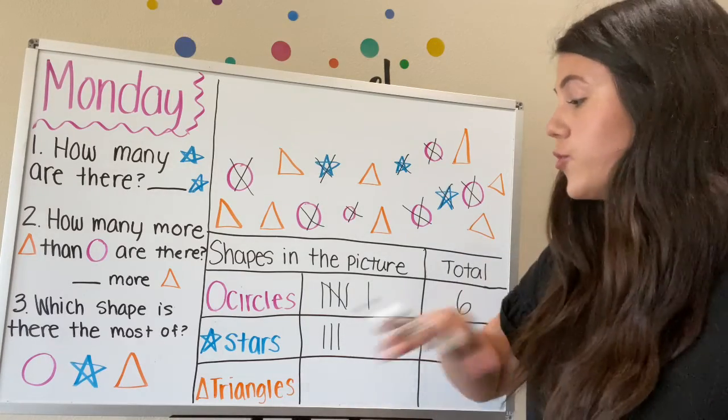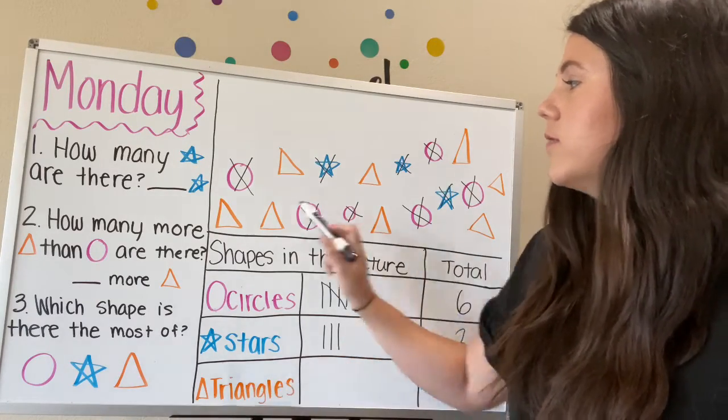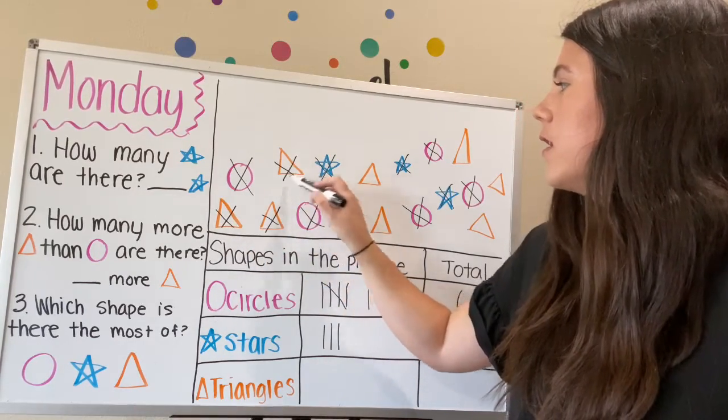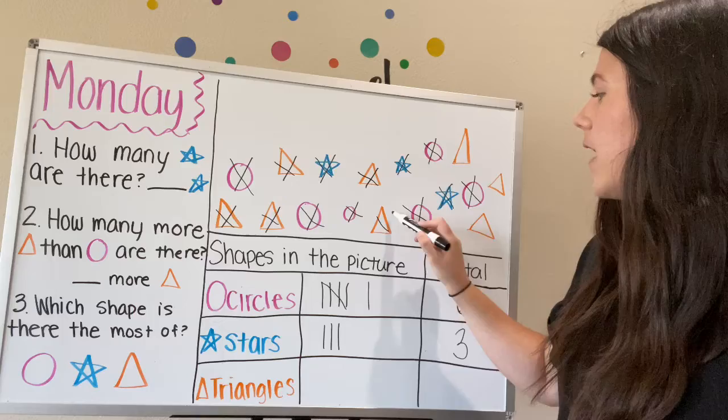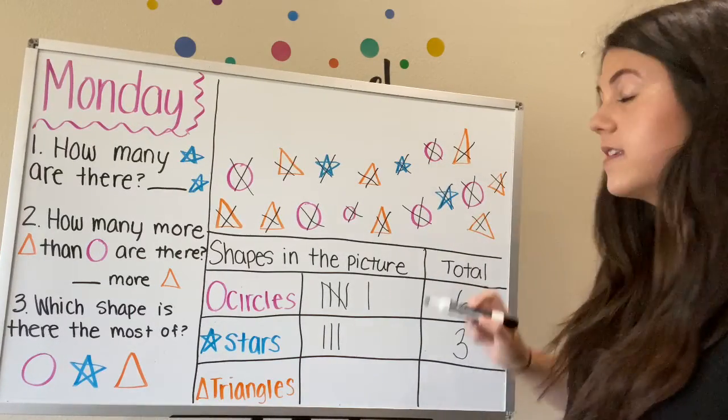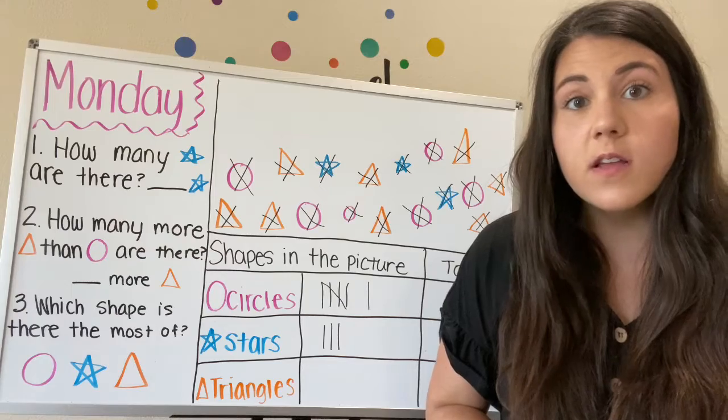The last shape that we need to do are triangles. Okay, are you ready to count? One, two, three, four, five, six, seven, eight. There are how many triangles? Eight.